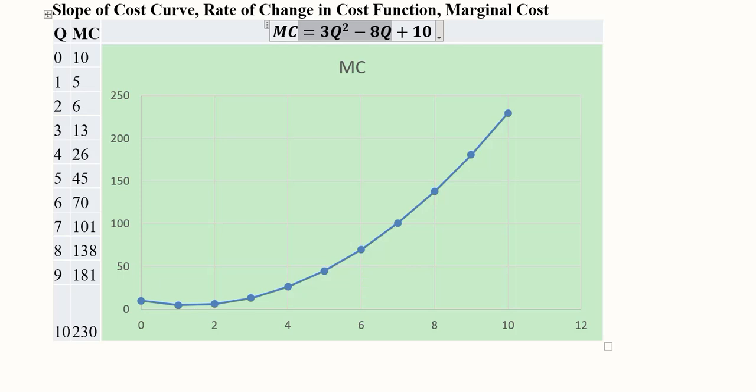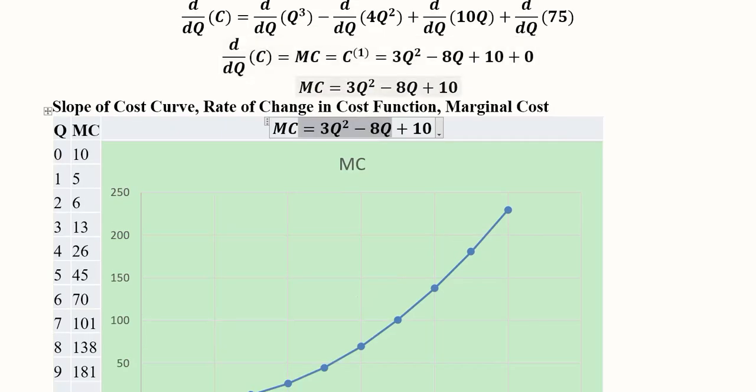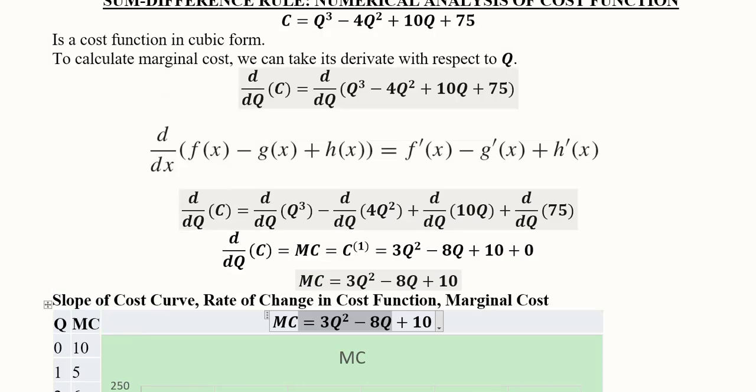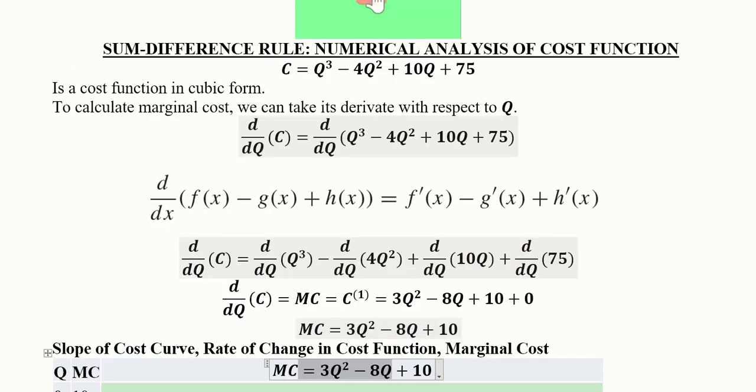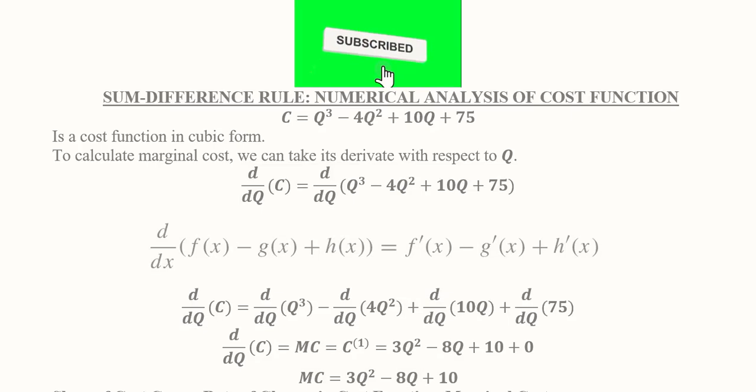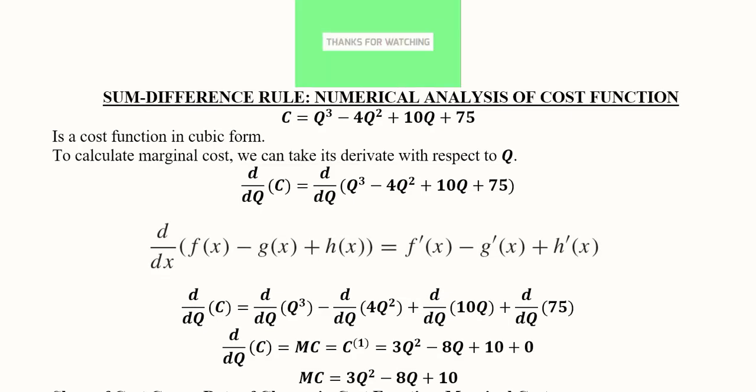Here we have made it on the basis of a table which was based upon the substitution in the marginal cost function and this marginal cost function is obtained by taking the derivative of the cost function in which we applied the sum and difference rules. This was the original function and finally we have found the value of the marginal cost function by applying sum and difference rules together.